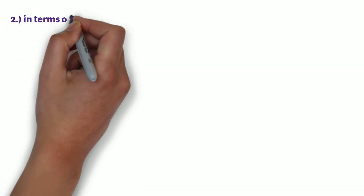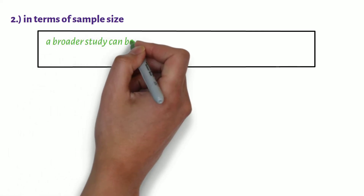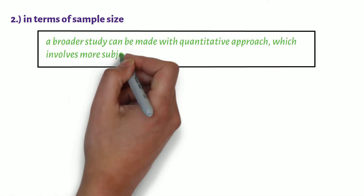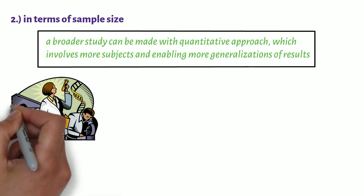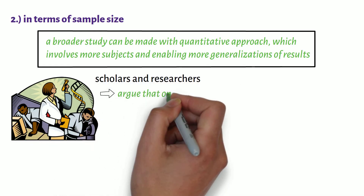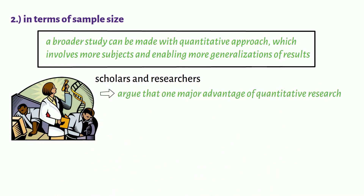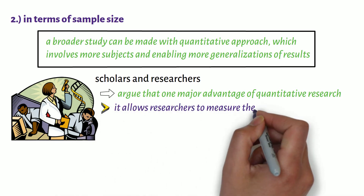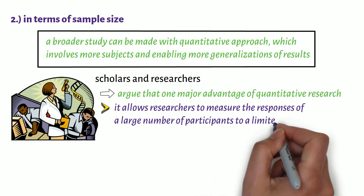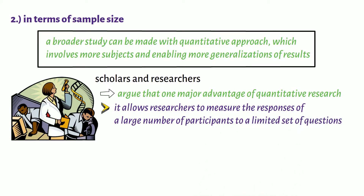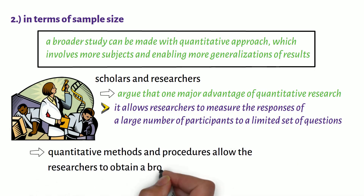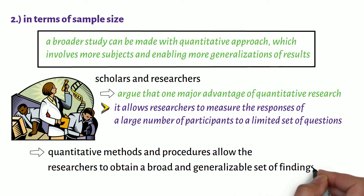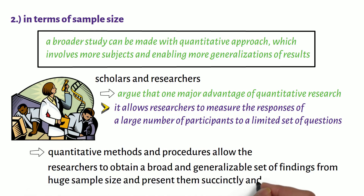Second, in terms of sample size. It must be noted that a broader study can be made with a quantitative approach, which involves more subjects and enabling more generalisations of results. In fact, scholars and researchers argue that one major advantage of quantitative research is that it allows researchers to measure the responses of a large number of participants to a limited set of questions. Also, quantitative methods and procedures allow the researchers to obtain a broad and generalisable set of findings from huge sample sizes and present them succinctly and parsimoniously.